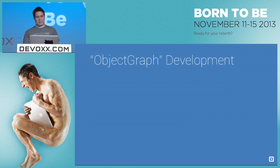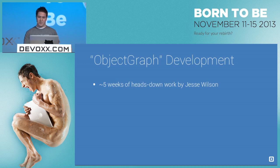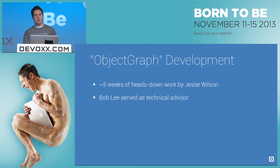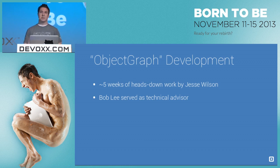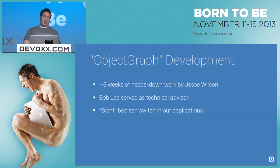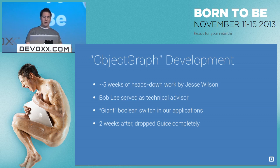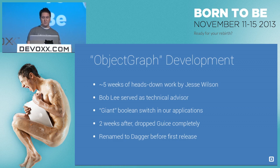The development process of this object graph was a five-week spike by Jesse Wilson. If you're not familiar with him, he worked on Guice version 2 as well, and he also worked on Dalvik and the core libraries for Android. Crazy Bob was technical advisor — Bob led the JSR 330, the dependency injection standard in Java, and he also created the original version of Guice. After about five weeks, we were able to get this into our applications with a giant Boolean to switch between Guice and object graph. About two weeks after that, we were able to get rid of Guice completely. And then we renamed it to Dagger.